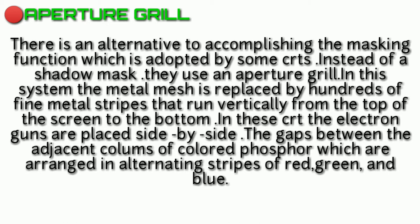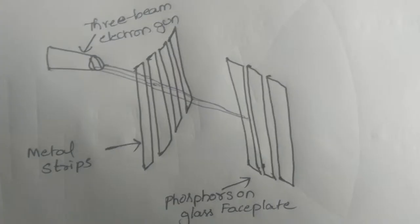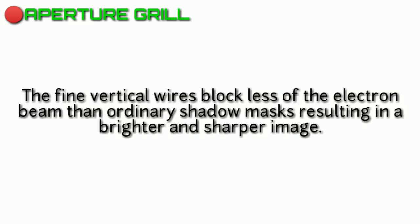This aperture grill - so the vertical wires block the electron beams. In the shadow mask, the electron beams go through round holes and get blocked. But the vertical stripes, through the gaps, the electron beams are blocked less. So it will be more brighter and sharper images formed.